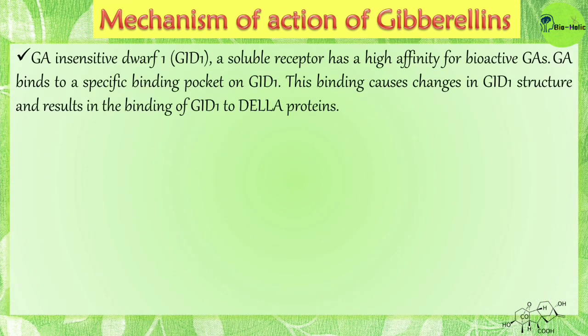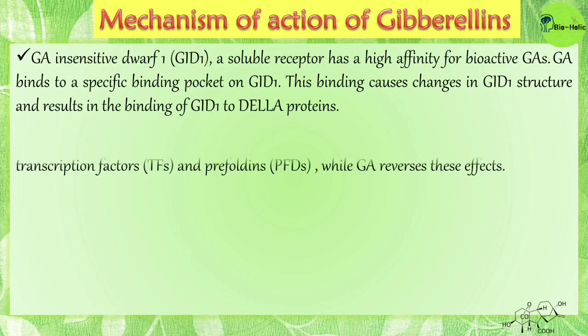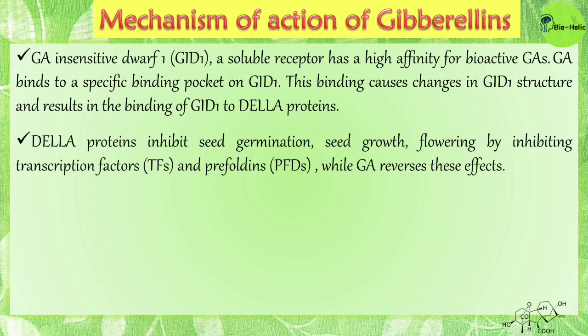Now, how do gibberellins act? The mechanism of action of gibberellins includes GID1, the GA-insensitive dwarf 1, a soluble receptor that has a high affinity for bioactive GAs. GAs bind to a specific binding pocket on GID1. This binding causes changes in GID1 structure and results in the binding of GID1 to a protein known as DELLA. DELLA proteins inhibit seed germination, seed growth, and flowering by inhibiting transcription factors and prefolins.